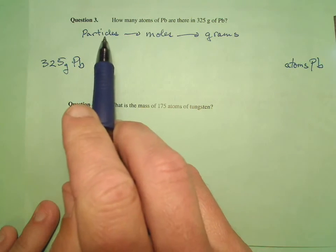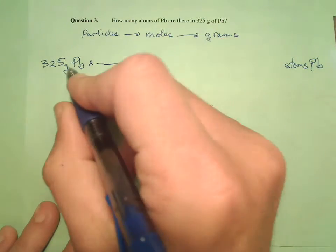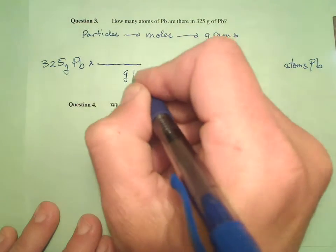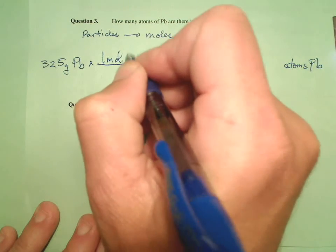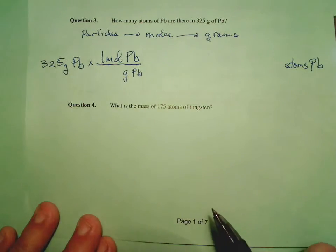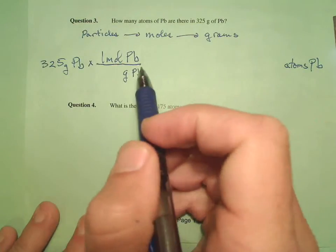So if we're going to follow our little procedure here, particles to moles, my first job is to get out of grams of lead. Grams have to go on the bottom, and into moles of lead. So that's my particles to moles.